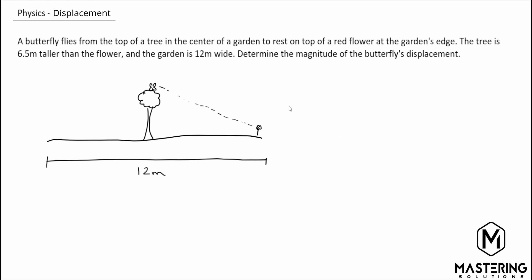So if you look at this picture we just drew a triangle and they tell us that the tree is 6.5 meters taller than the flower.